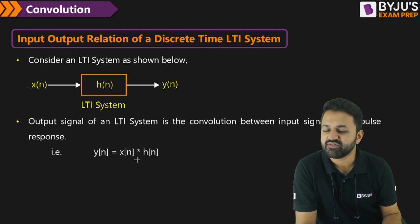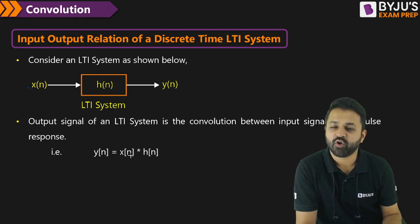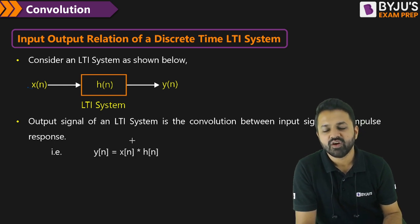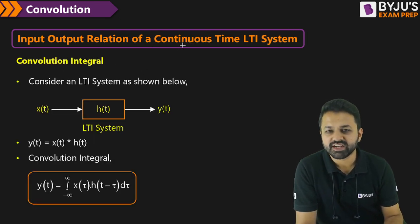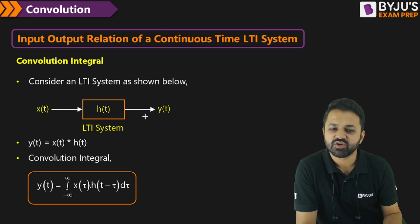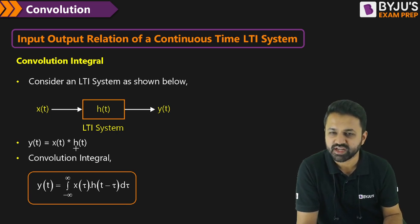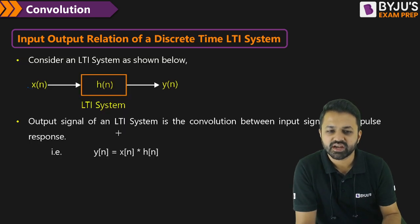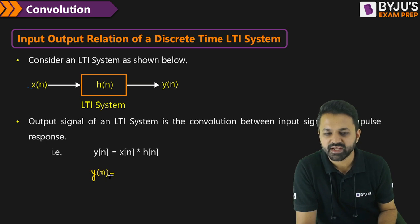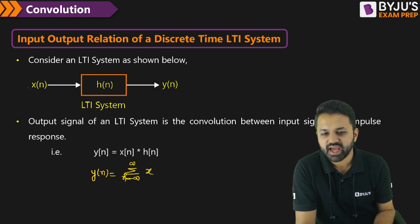We need to understand how to perform the convolution in a very fast manner, what are the different properties of the convolution sum and the convolution integral, and what are the standard or fast ways to calculate convolution between standard signals. For the continuous time LTI system, represented by x of t with impulse response h of t, you get y of t as the convolution integral from minus infinity to infinity of x(tau) h(t minus tau) d tau. For the discrete case, the convolution sum is written as: summation from k equals minus infinity to infinity of x(k) h(n minus k).